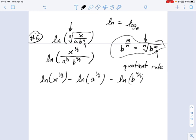And now you can see these exponents can be dealt with. We've done this before. This is just 1 third natural log of x minus 1 third natural log of a minus 4 thirds natural log of b.